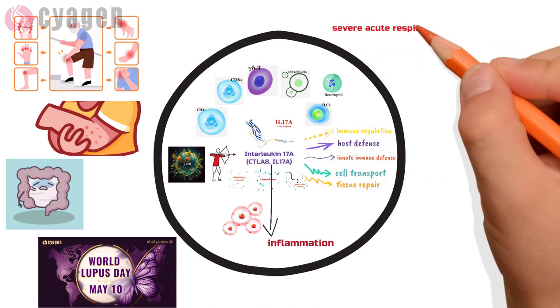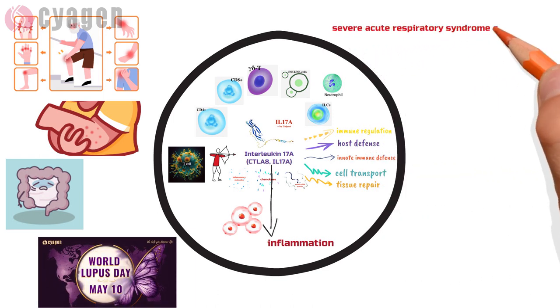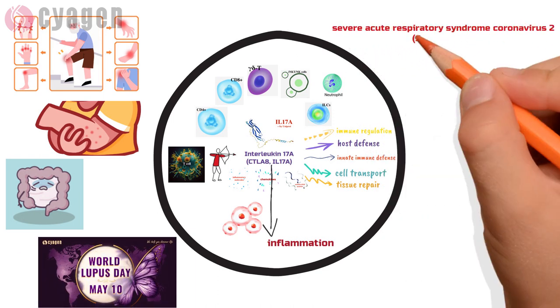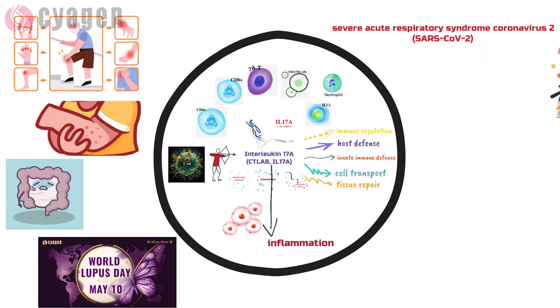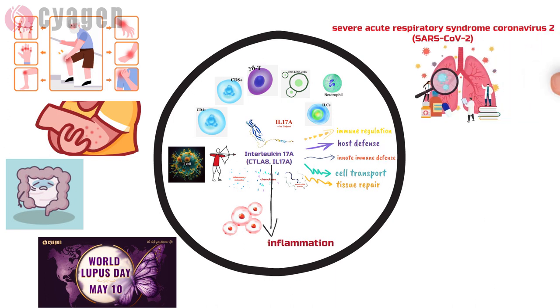The lung injury caused by severe acute respiratory syndrome coronavirus 2 (SARS-CoV-2) is to a great extent the result of inflammatory response enhanced by IL-17A.